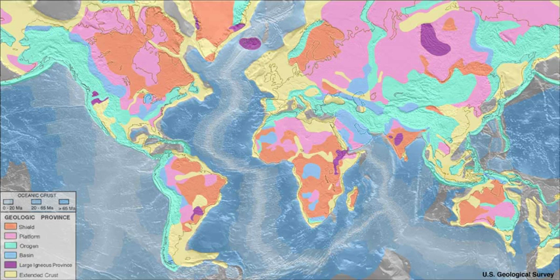In geology, the crust is the outermost solid shell of a rocky planet, dwarf planet, or natural satellite. It is usually distinguished from the underlying mantle by its chemical makeup; however, in the case of icy satellites, it may be distinguished based on its phase.